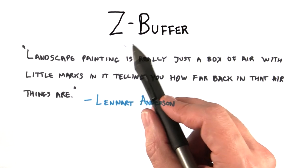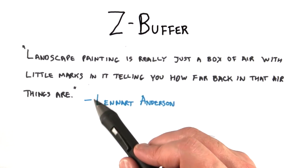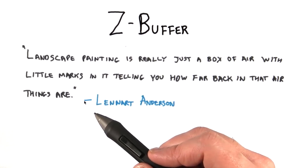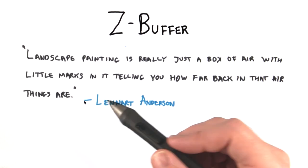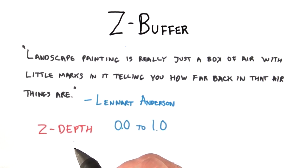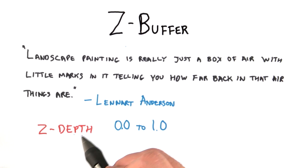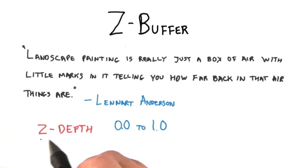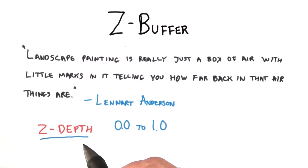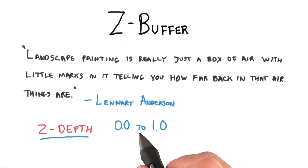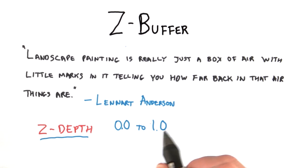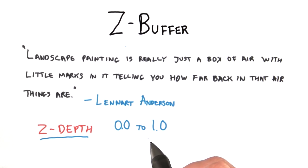The Z in the Z-buffer stands for distance from the camera. Buffer is just another word for a data array, like an image. So for the image, in addition to storing a color at each pixel, we also store a distance, which is called the Z-depth. The Z-depth is often considered as a floating point number that ranges from 0, meaning close to the eye, to 1, meaning the maximum distance from the eye. The Z-buffer is initially cleared by filling it with 1s.